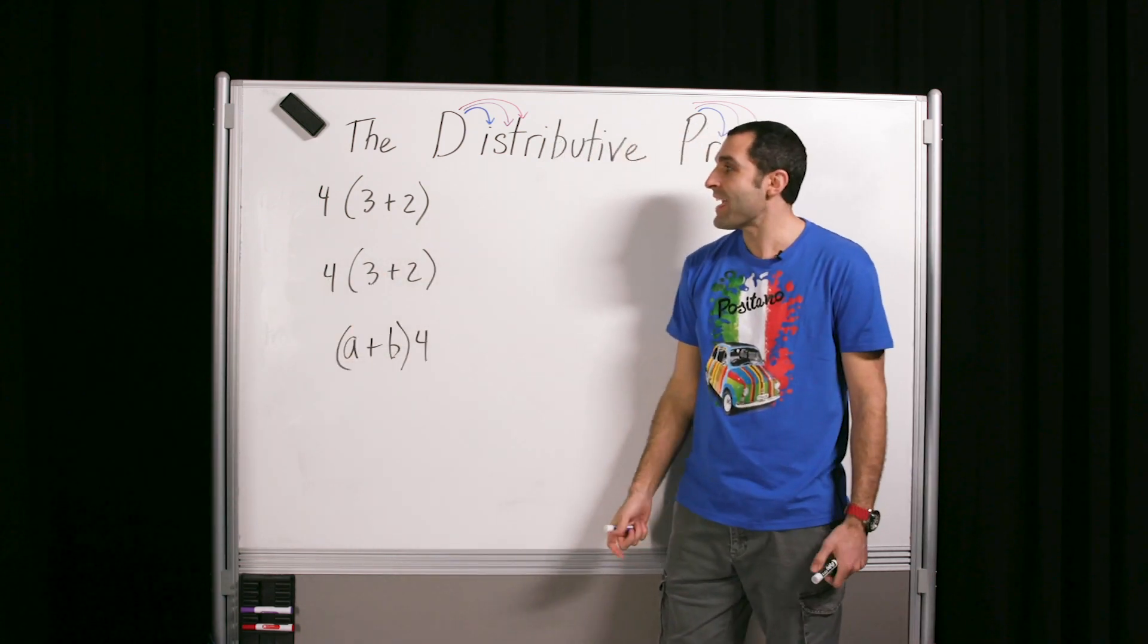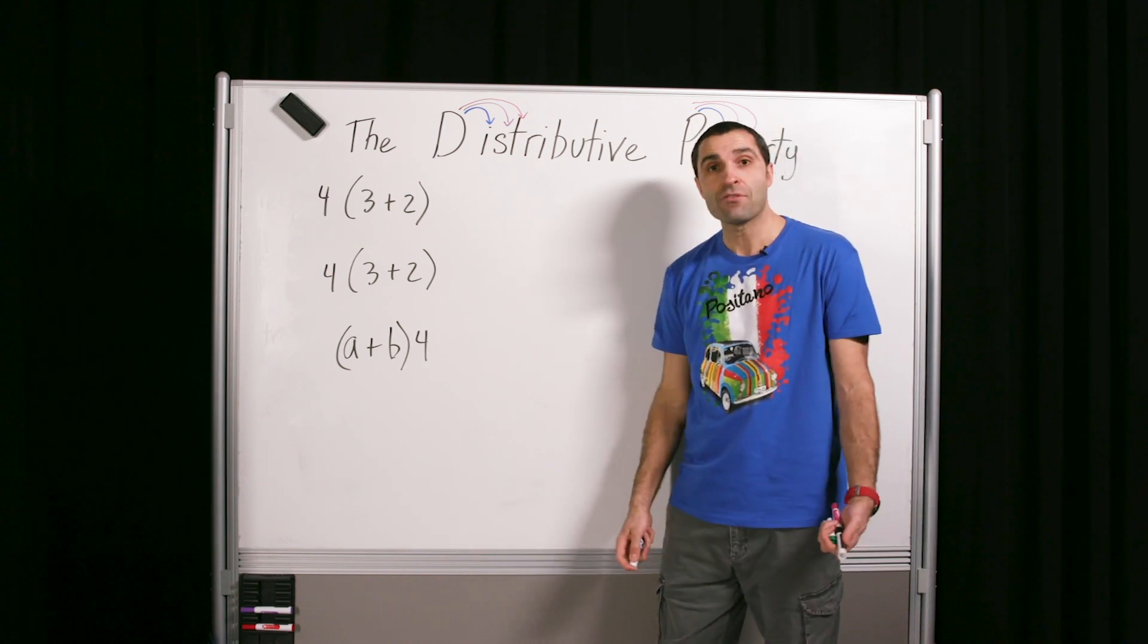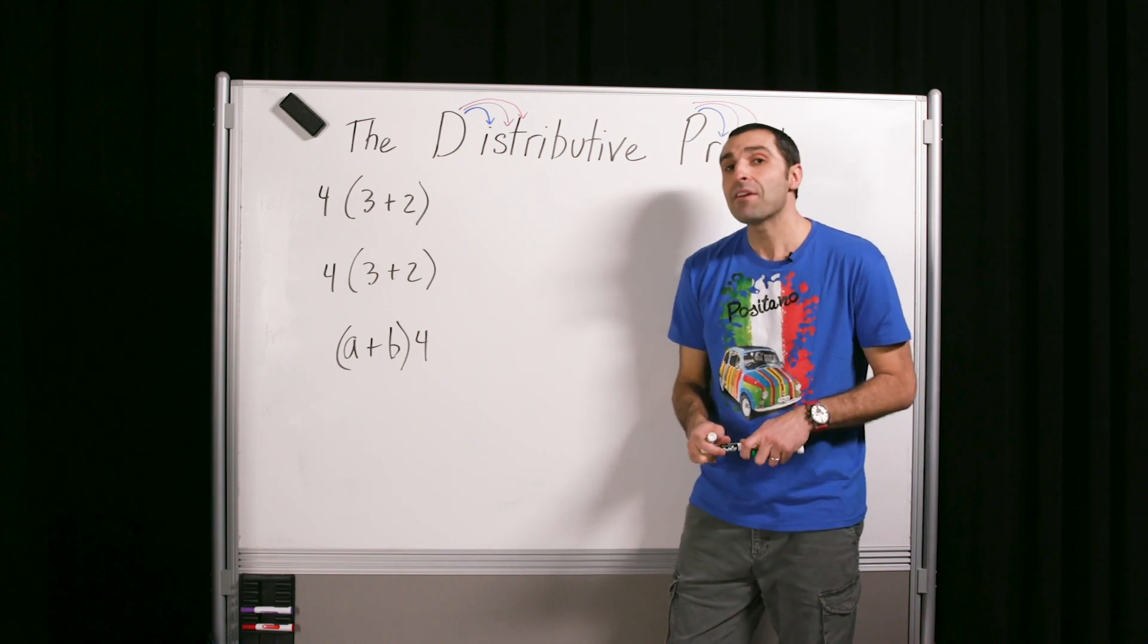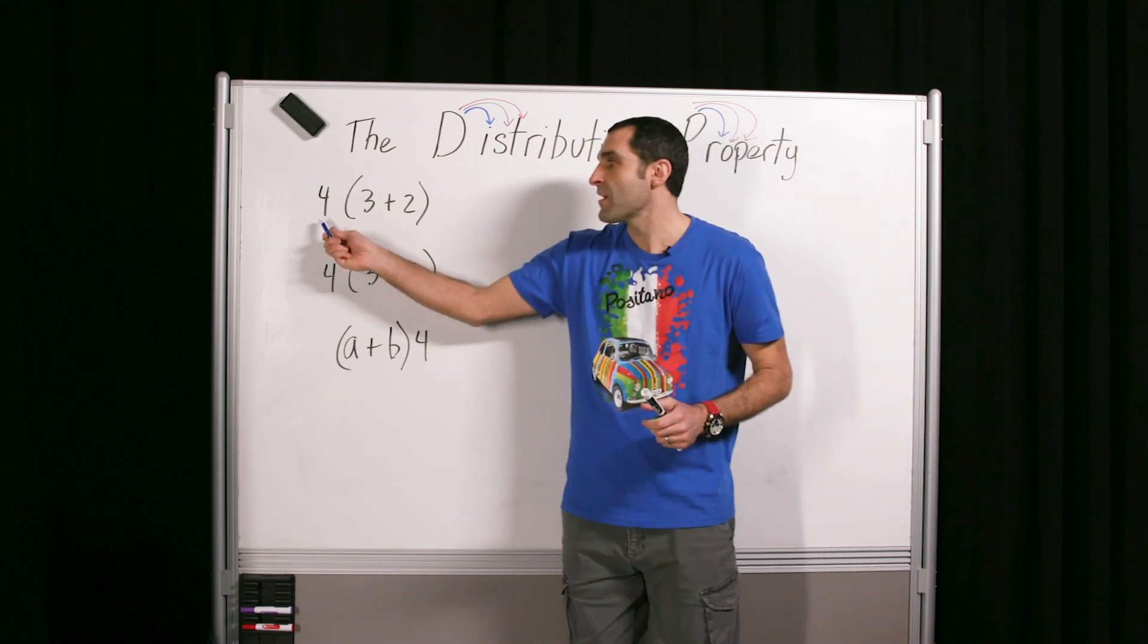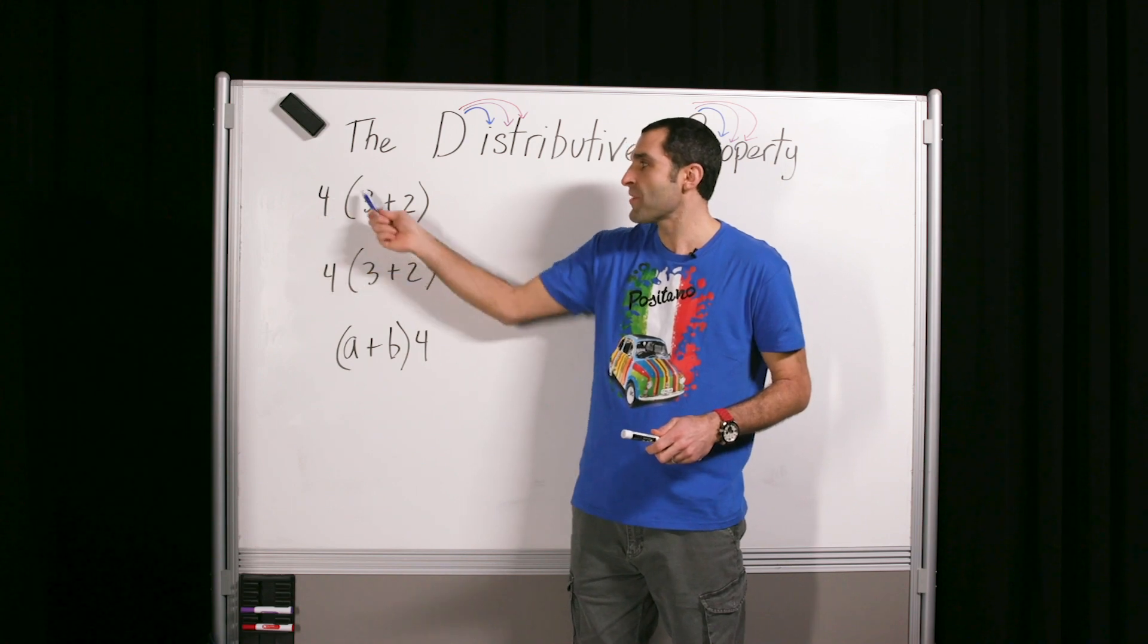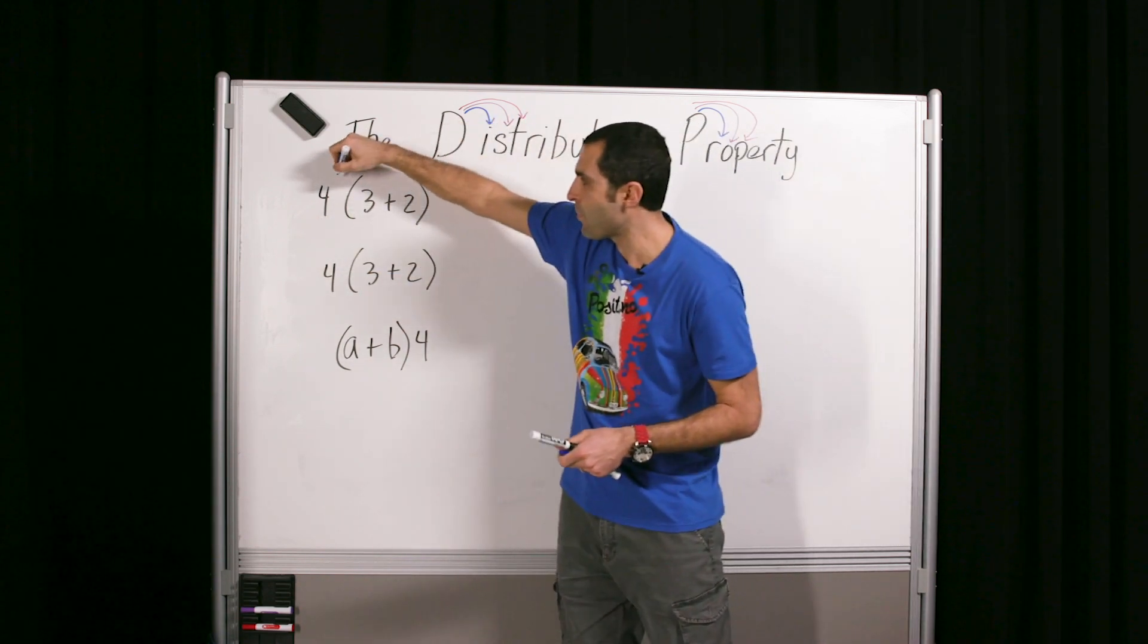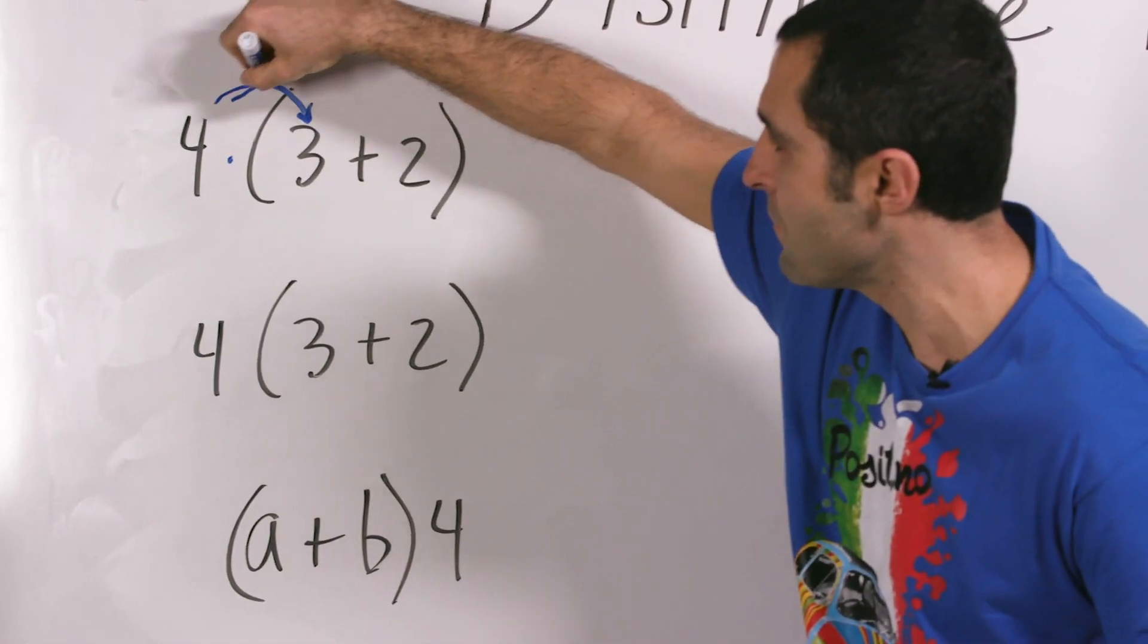So if we're going to do the distributive property, it basically has one act, and we're going to do that for the next several exercises. Some people get carried away with distributive property. In short, distributive property is if you have something outside a parenthesis set multiplied, that four distributes, as you can see from our handy-dandy guide, that four distributes to the three with multiplication. Boom. And to the two.